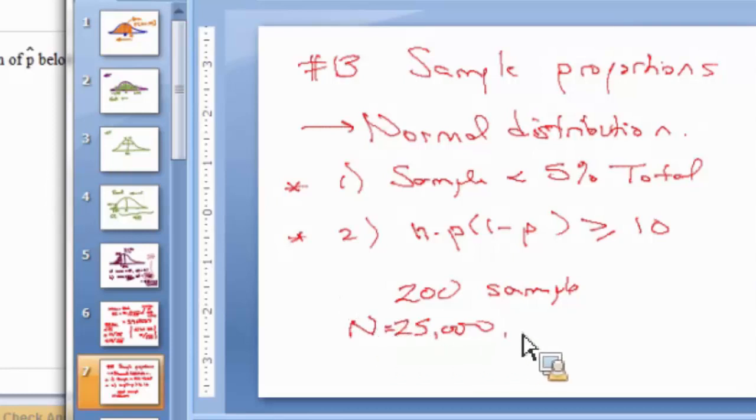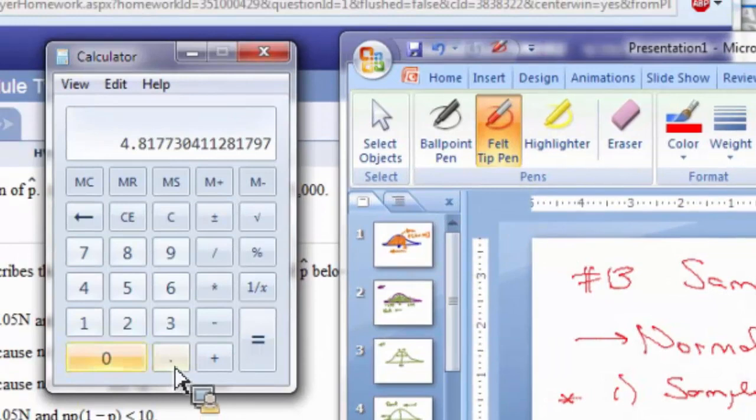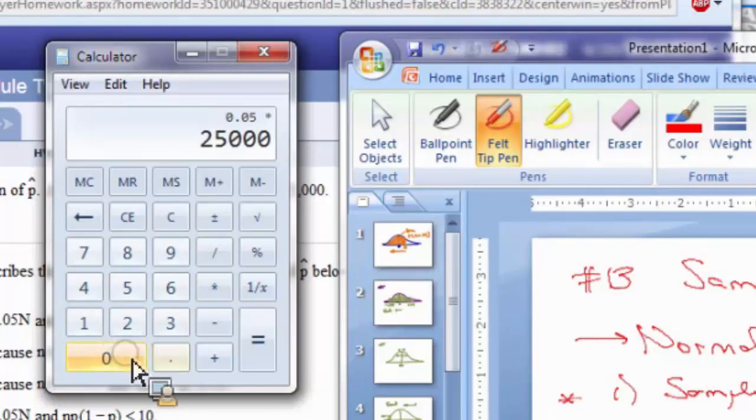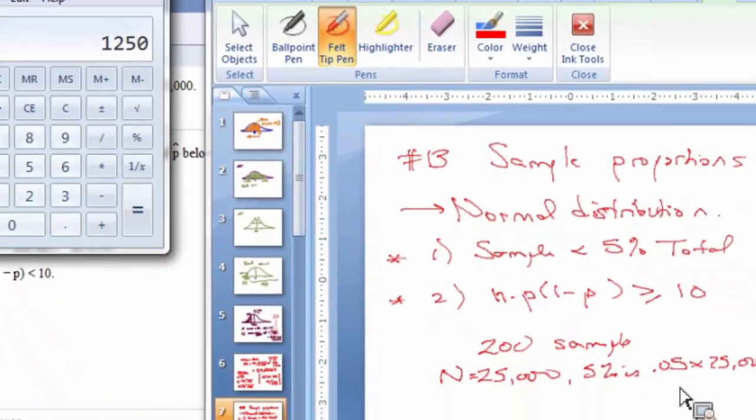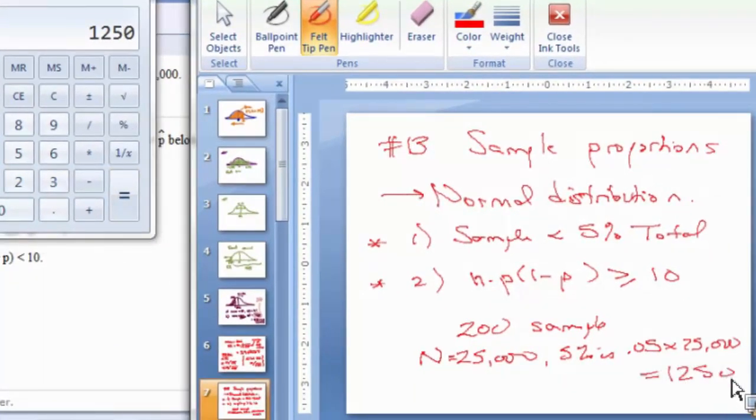5% of that is 0.05 times 25,000. And if I want to use my calculator, 0.05 times 25,000, that's 1,250. That means we can take at most 1,250 in our sample. We have 200, so we're okay. We can take as many as 1,250. We only took 200.